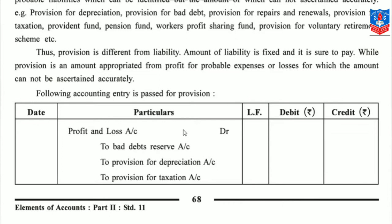For all these provisions we keep money aside — out of profit. When we invest money from profit into provisions, obviously our profit reduces by that amount. You can see in the accounting entry that the profit and loss account has been debited. Whenever the business earns profit in that year, provisions are to be kept aside for meeting contingencies and worst situations. Whatever amount we set aside from profit for provisions reduces our profit — that's why profit and loss account is debited.